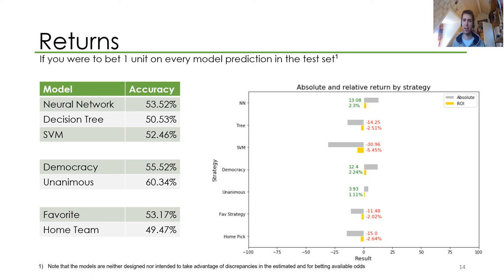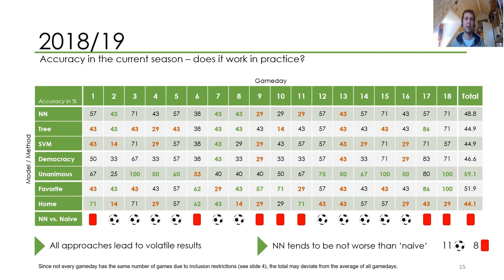One note: the model is not designed nor intended to optimize any betting strategies. Most important, however, is does it work in practice? This table shows the accuracy in percent for each game day 1 to 18 of the current season so far, and the total of the entire season so far. All approaches are quite volatile — each has a game day where it's the best and a game day where it's the worst. The unanimous approach once again tends to be the superior approach. Overall, the neural network versus the naive approaches: the neural net tends to be not worse than the better of the two approaches eleven times, whereas eight times it's outright worse.